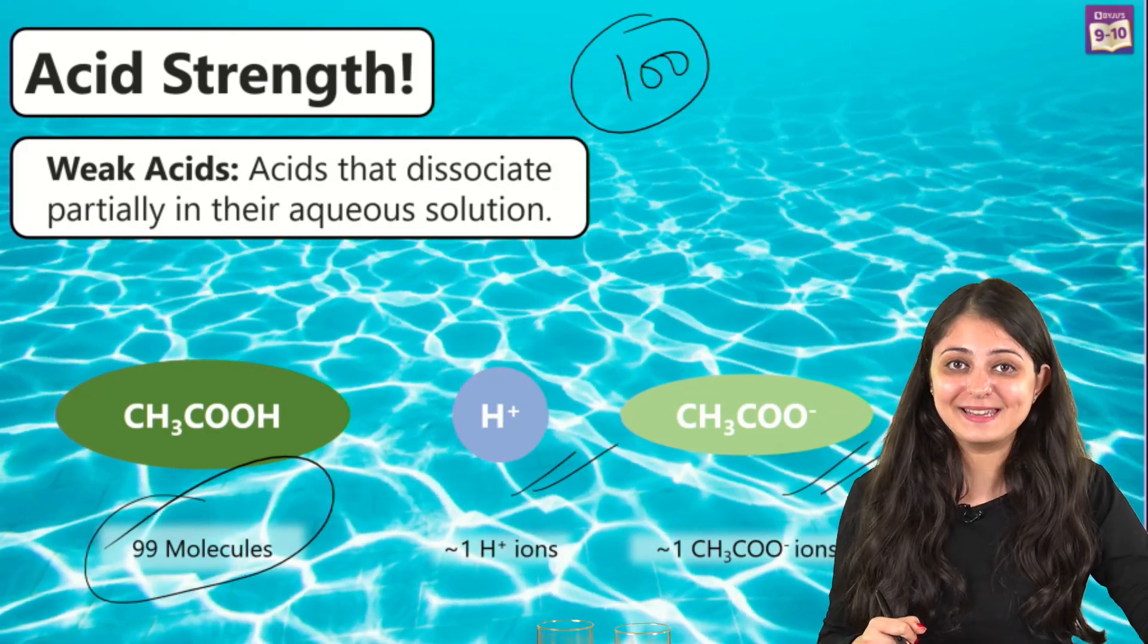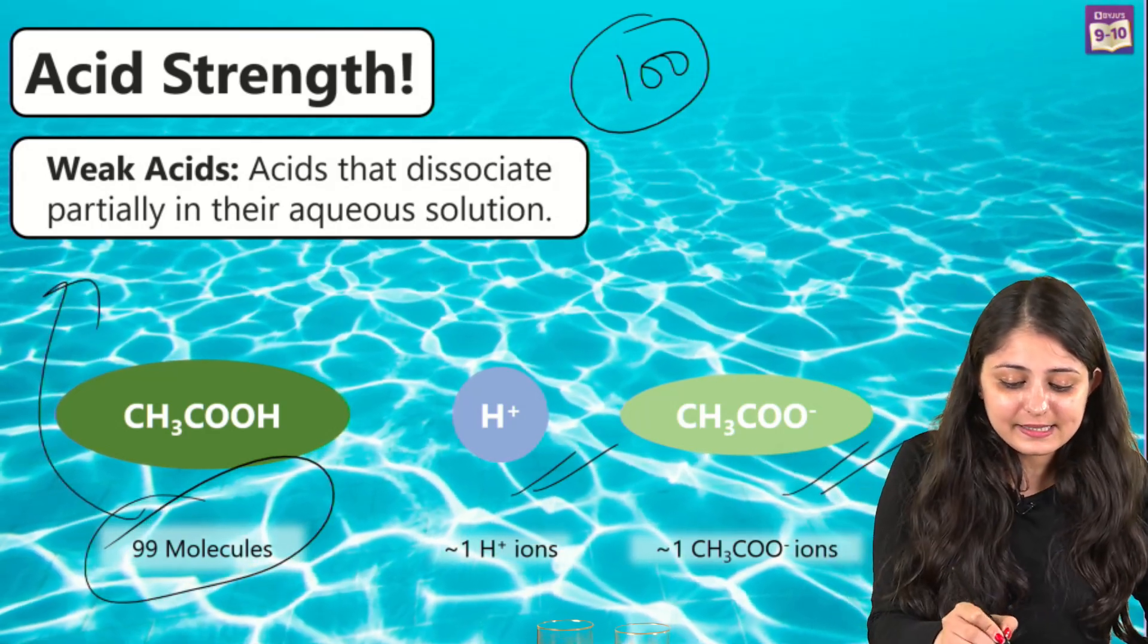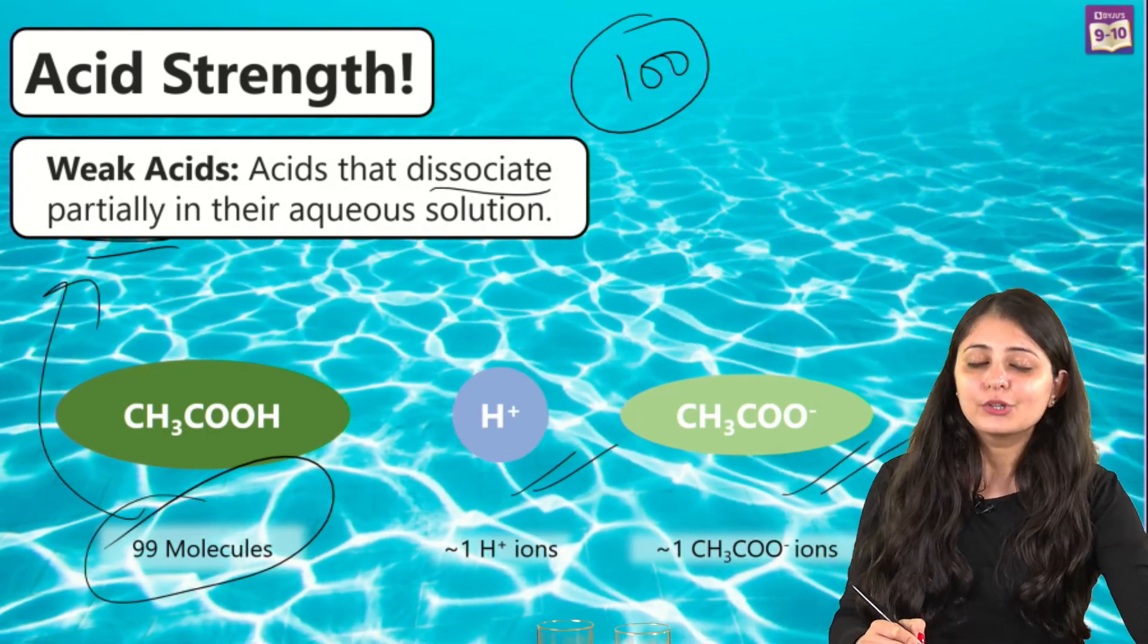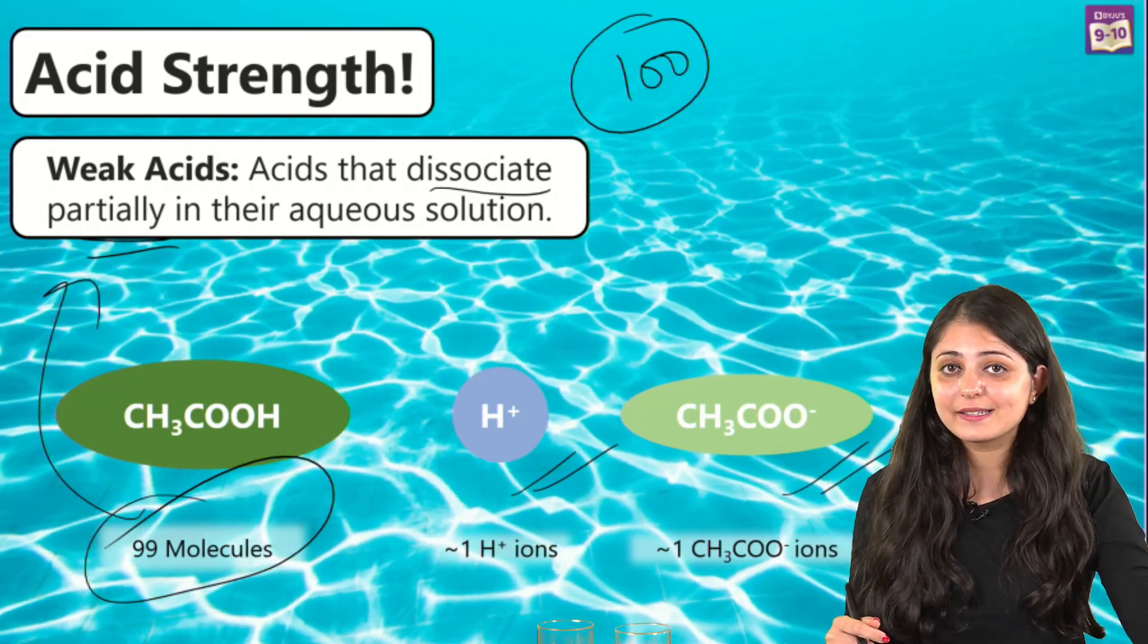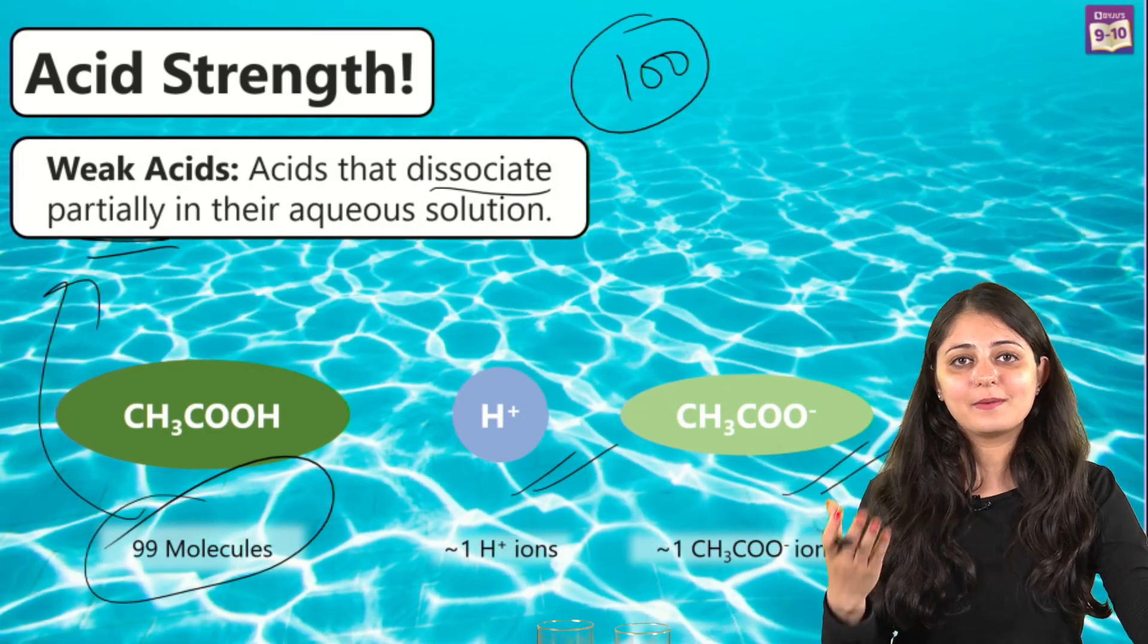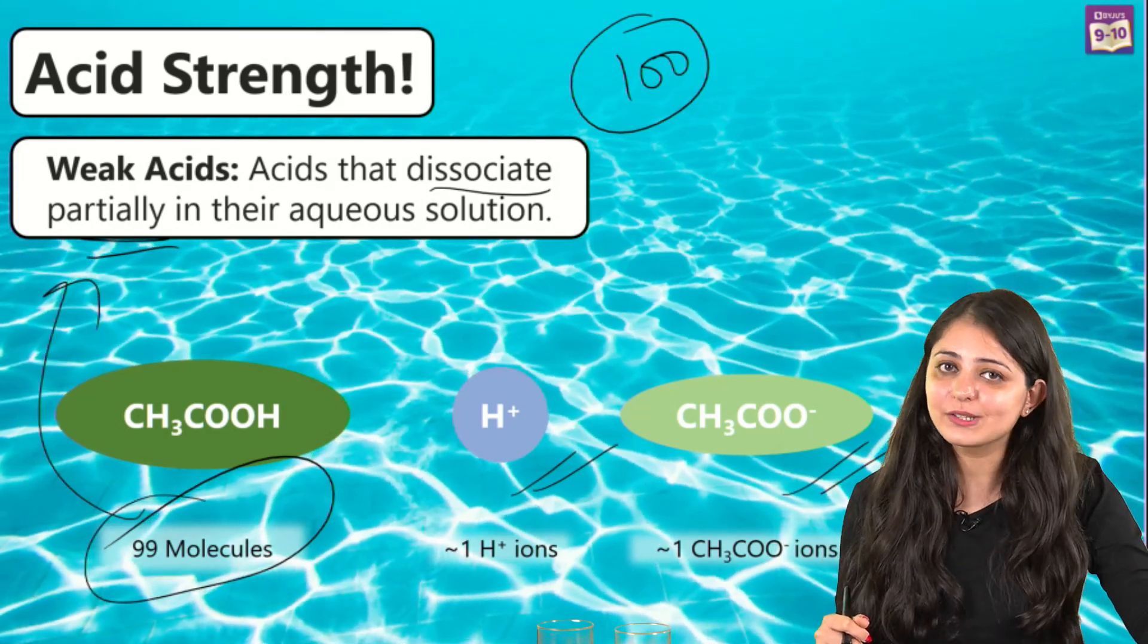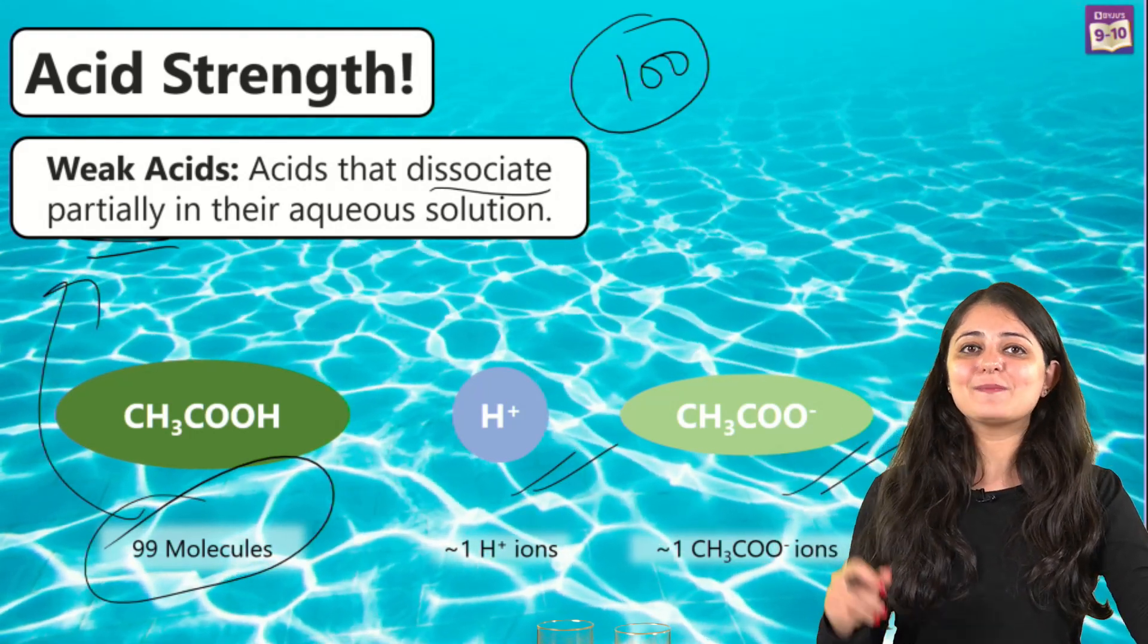You see this inability to dissociate? That is actually what is making acetic acid a weak acid. So weak acids dissociate partially in the aqueous solution. Strong acids like hydrochloric acid, nitric acid, sulfuric acid dissociate completely in water, while weak acids like acetic acid or phosphoric acid dissociate partially.